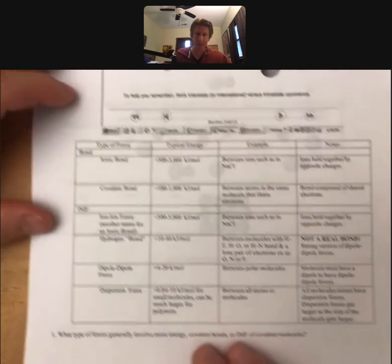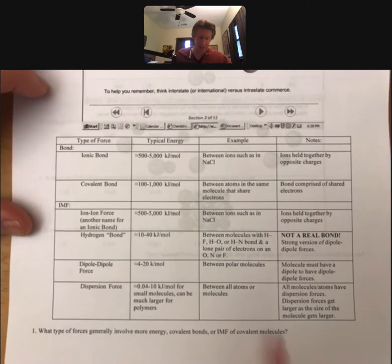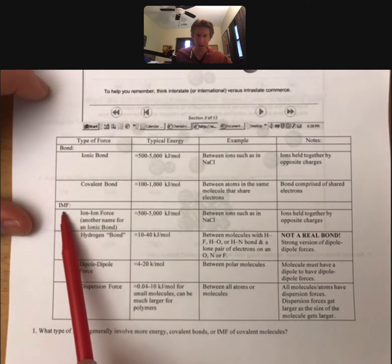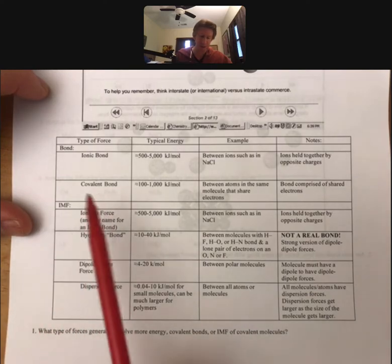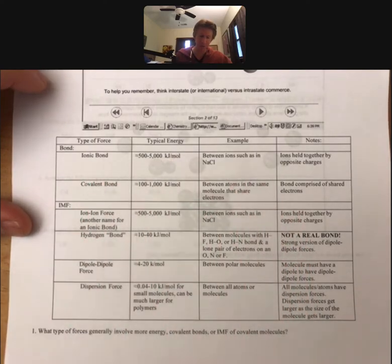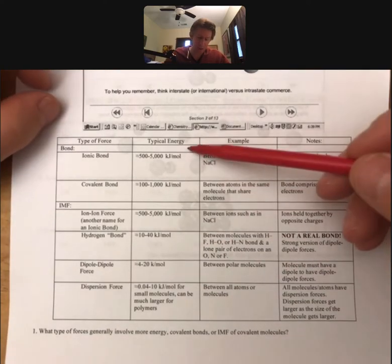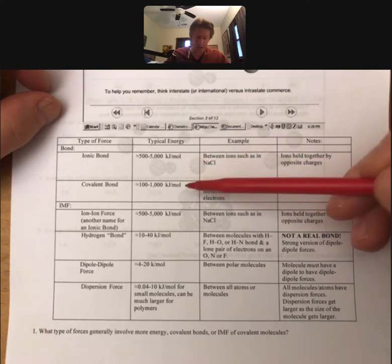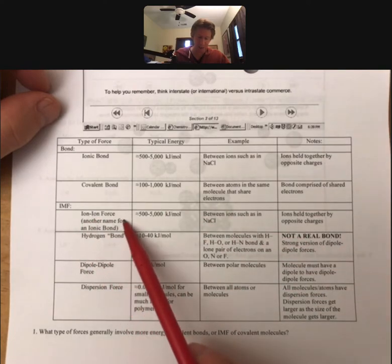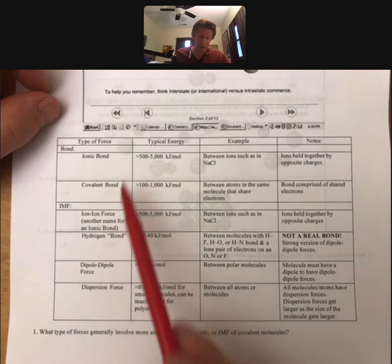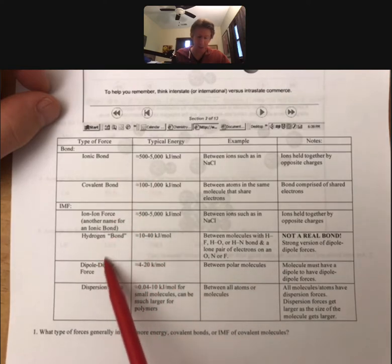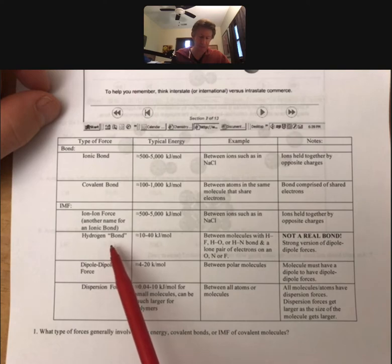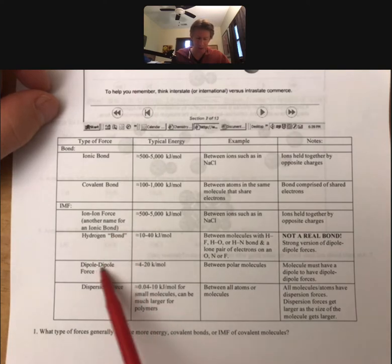And the first thing we have to understand is the difference between bonds and intermolecular forces. This table attempts to show typical energies for ionic and covalent bonds, and those are much larger than - well, the ion-ion force is the ionic bond, so these two are the same. But the rest of them are much smaller - hydrogen bond, dipole-dipole force, and dispersion force are all much smaller.